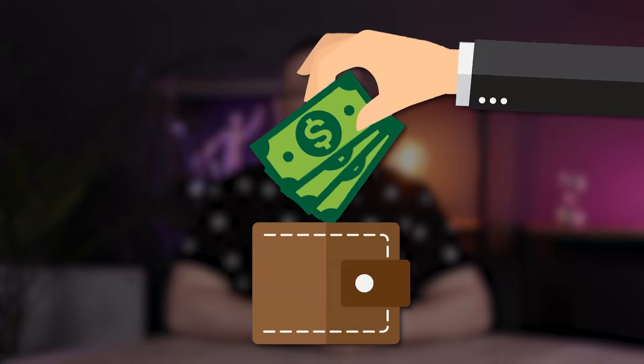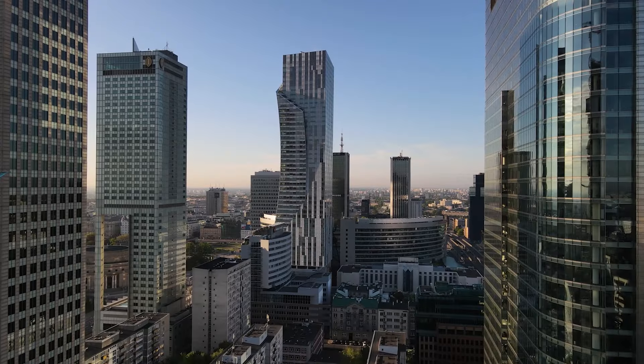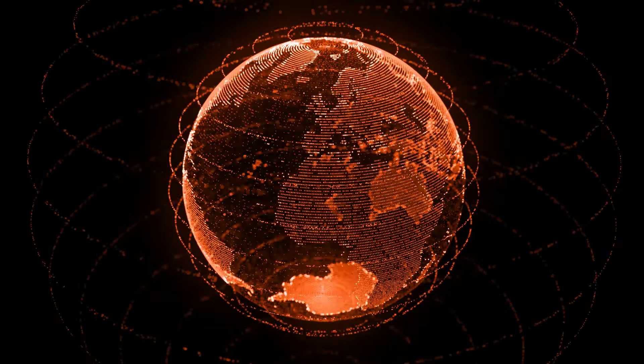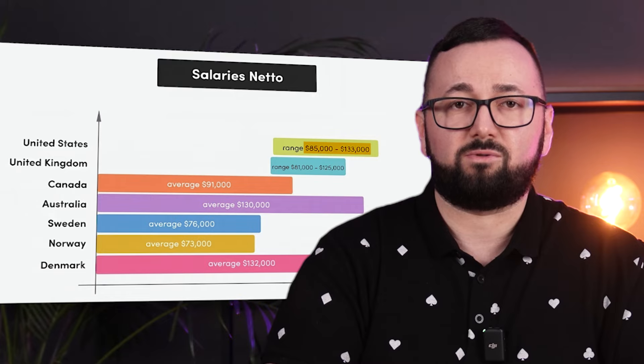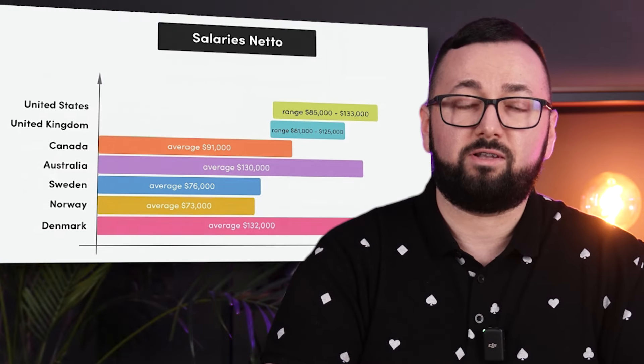Salaries and benefits still vary depending on geographical location. The cost of living and salary standards differ by region, directly influencing salary expectations of potential employees. For example, the average salary of a software developer in the United States ranges from $85,000 to $133,000, but salaries vary substantially in other regions.